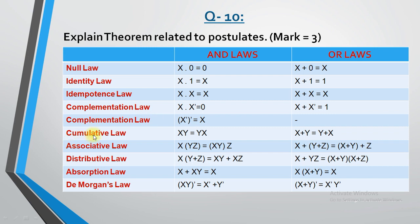Next is called the commutative law. It means x into y is the same as y into x. For example, 2 times 3 equals 3 times 2 — both are equal. Similarly in the OR gate, 2 plus 3 equals 3 plus 2. The sequence of variable names does not matter. You can write xy or yx; similarly x plus y is the same as y plus x.